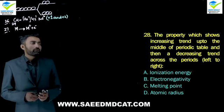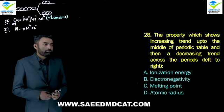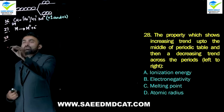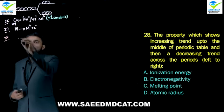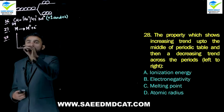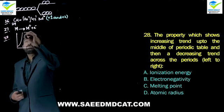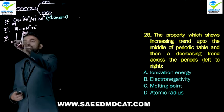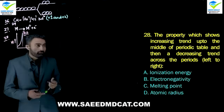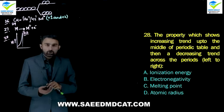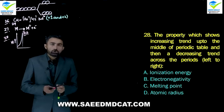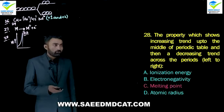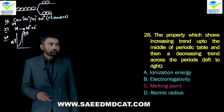Question 28: Which property shows an increasing trend up to the middle of the period and then a decreasing trend? A graph shows the value increasing then coming back down, with maximum at group 4A. This trend is shown by melting point and boiling point — they increase up to group 4A then decrease. Ionization energy, electronegativity, and atomic radius either only increase or only decrease across a period. So charlie option: melting point.